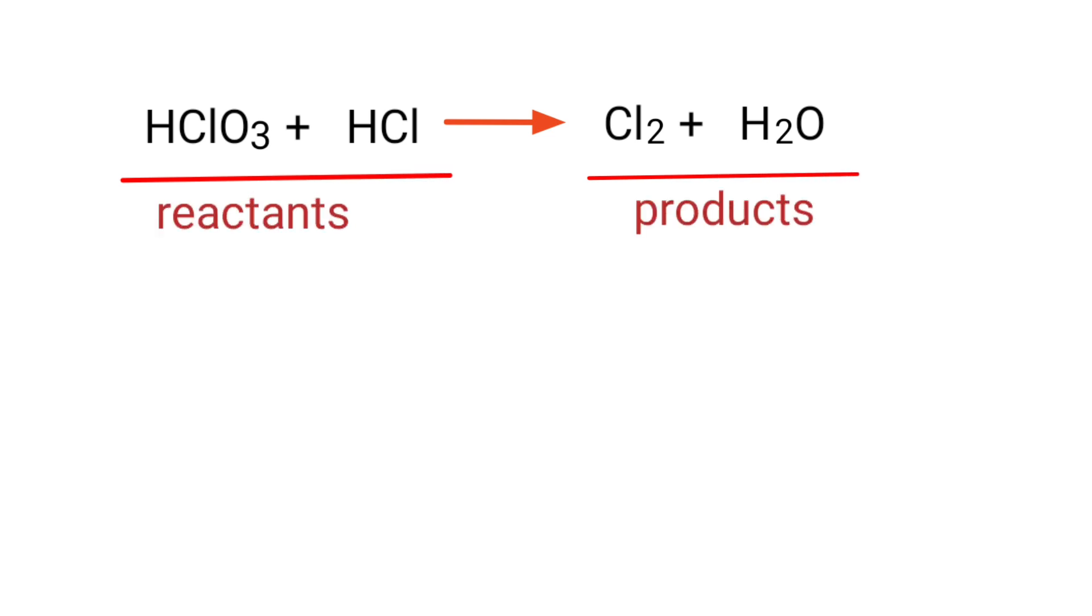In this equation, the reactants are Chloric Acid and Hydrogen Chloride, and the products are Chlorine Gas and Water.